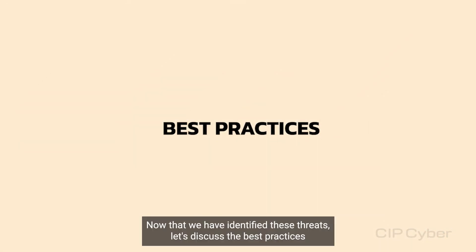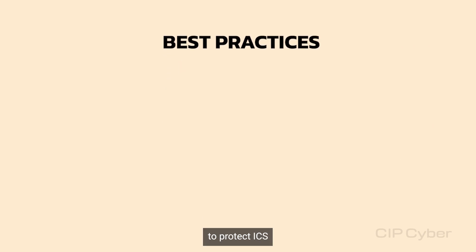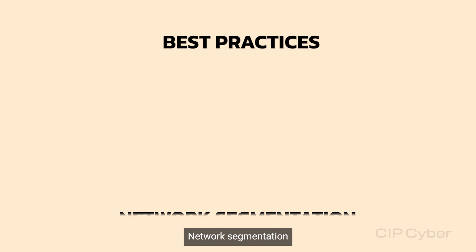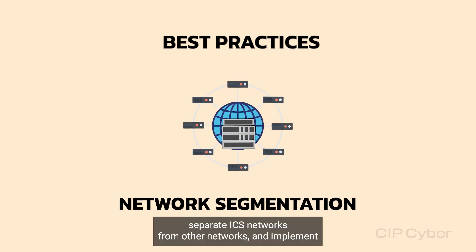Now that we have identified the threats, let's discuss the best practices to protect ICS. Network Segmentation: Separate ICS networks from other networks and implement multiple layers of security to minimize the potential attack surface.